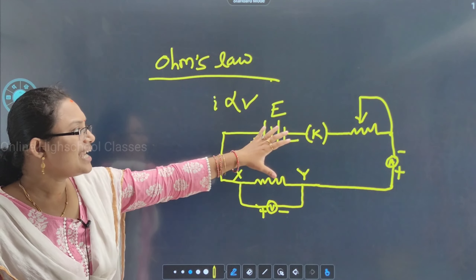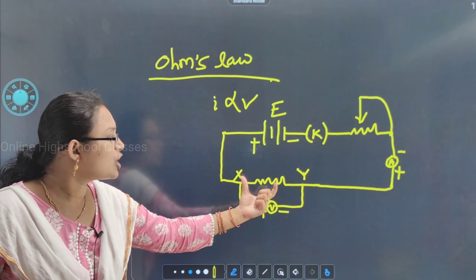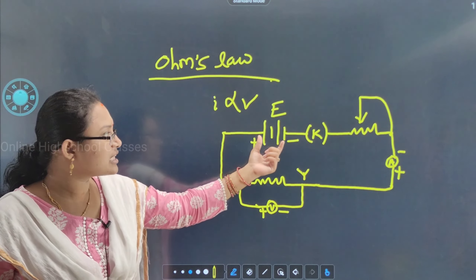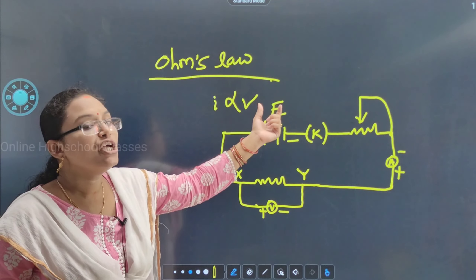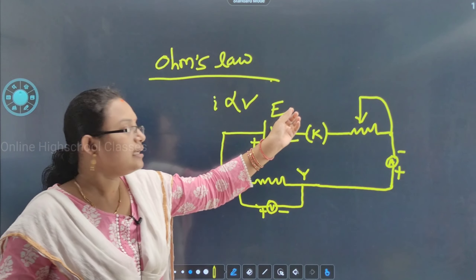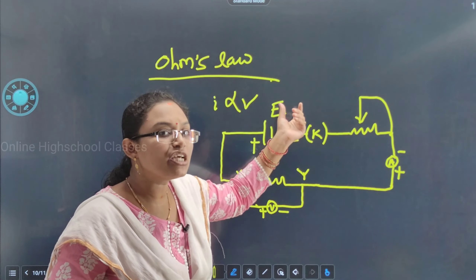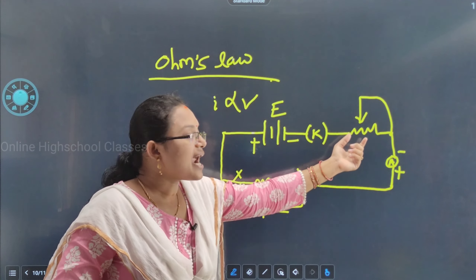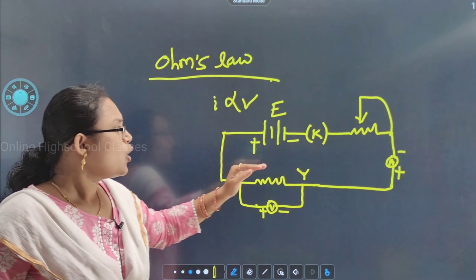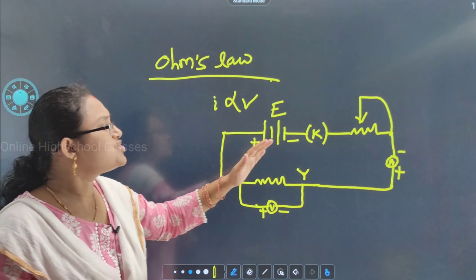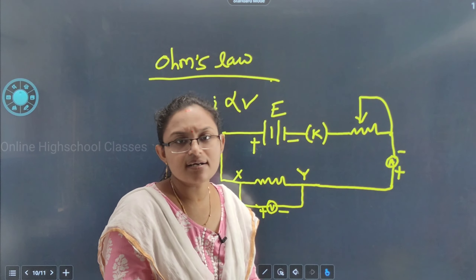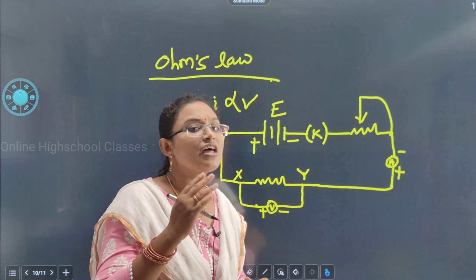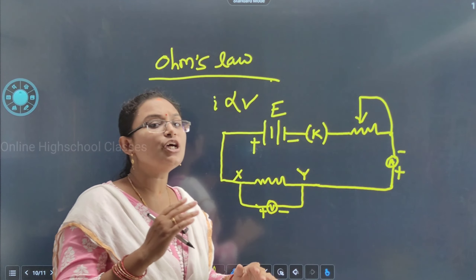In this diagram, conductor XY is connected with a battery having electromotive force E, switch K, and a rheostat. We have to change the position of the rheostat and take values for different values of current I, noting the value of V.